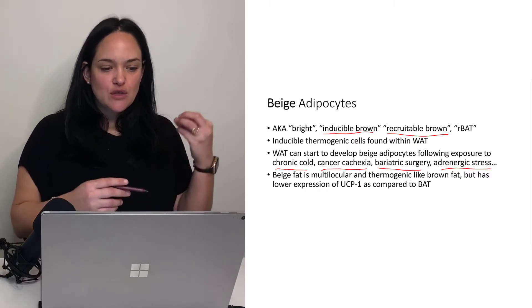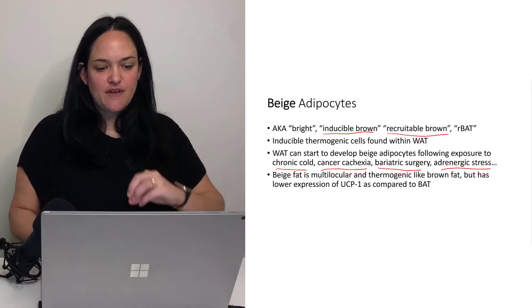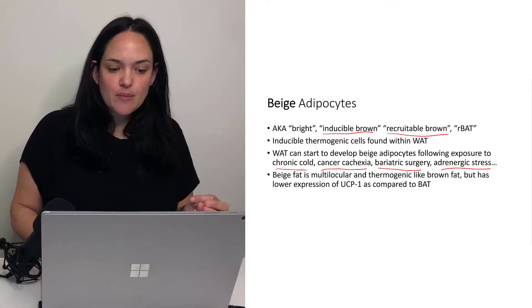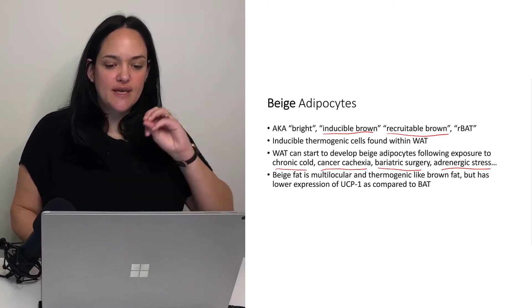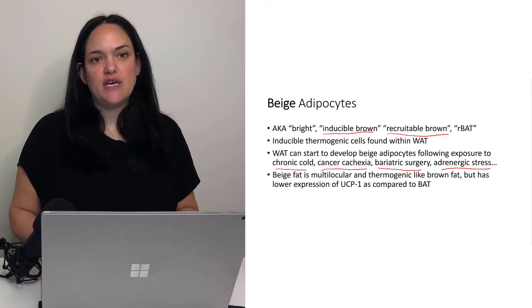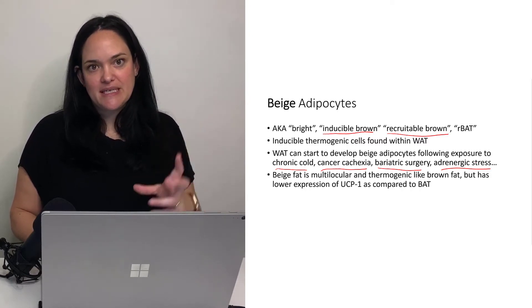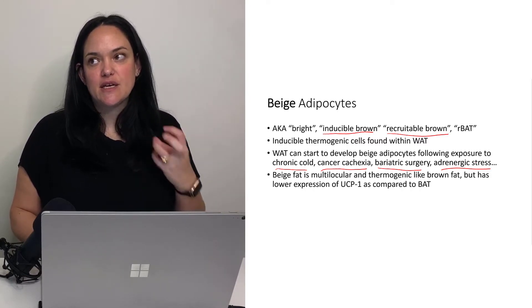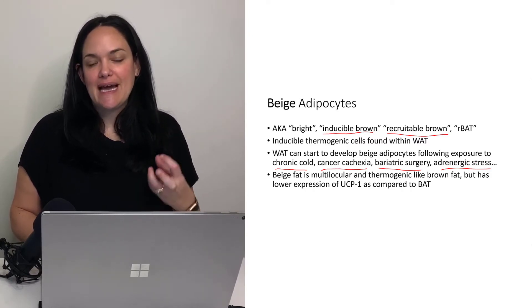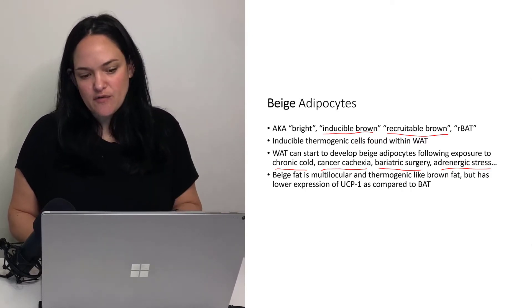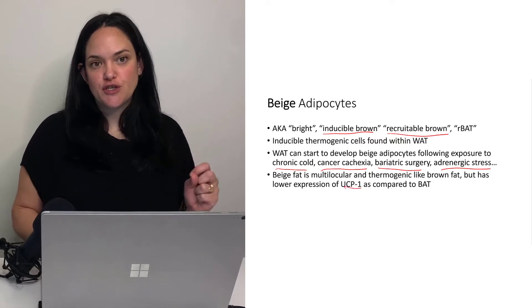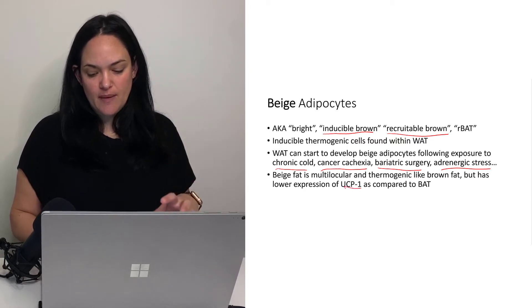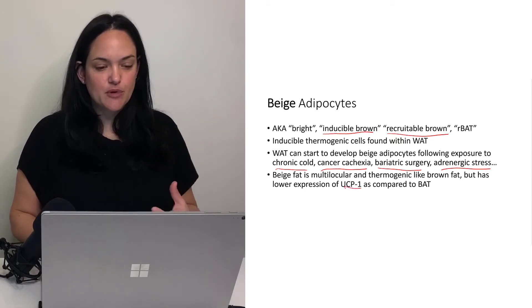Beige fat looks like brown fat — it is multilocular and it is more thermogenically active, but it's not as metabolically active as brown fat, and there's a lower expression of uncoupling protein one.